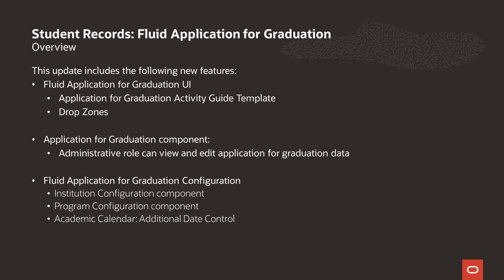Included in this new feature: an Application for Graduation Activity Guide template to use in the Fluid user interface; the Enterprise Components Drop Zone feature that will allow you to incorporate existing or future extensions to support your business process; and an Administrative component has been added to allow an Admin user to view and edit applications for graduation data. The Fluid application for graduation configuration includes configuration at either the institution or program level, and the Academic Calendar has been enhanced for an additional date control.